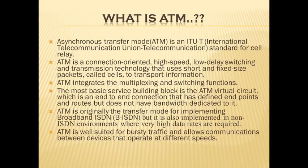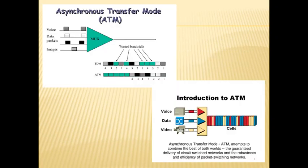ATM was originally the transfer mode for implementing broadband ISDN (B-ISDN), but it is also implemented in non-ISDN environments where very high data rates are required. ATM is well suited for bursty traffic and allows communication between devices that operate at different speeds. These ATM Asynchronous Transfer Mode images show how data can be transmitted.